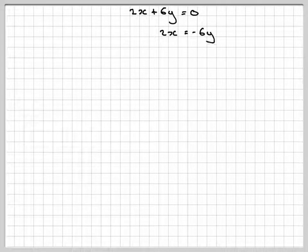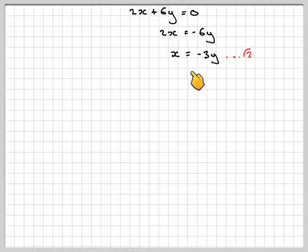That'll give that 2x is minus 6y, and that x is equal to minus 3y. We'll call that equation 2.